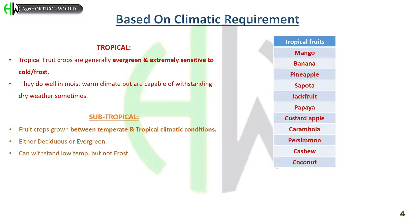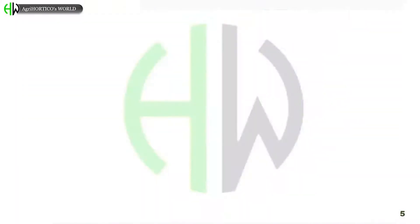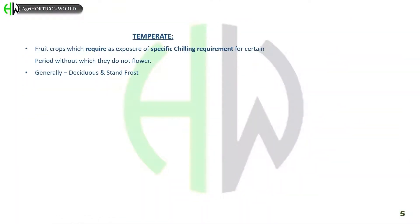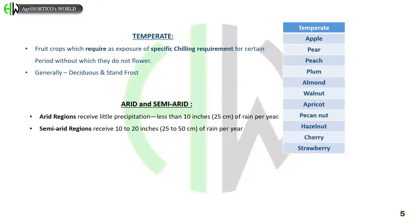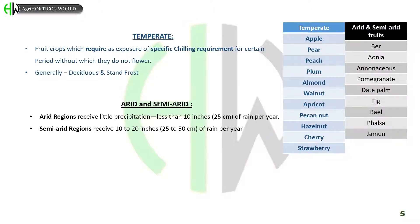Temperate fruit crops require exposure to a specific chilling requirement for a certain period, without which they do not flower. Generally they are deciduous and can stand freezing temperatures. Examples are apple, pear, peach, plum, almond, walnut, apricot, pecan nut, hazelnut, cherry, and strawberry. Arid and semi-arid: arid regions receive less than 10 inches of rainfall per year, and semi-arid regions receive 10 to 20 inches of rain per year.